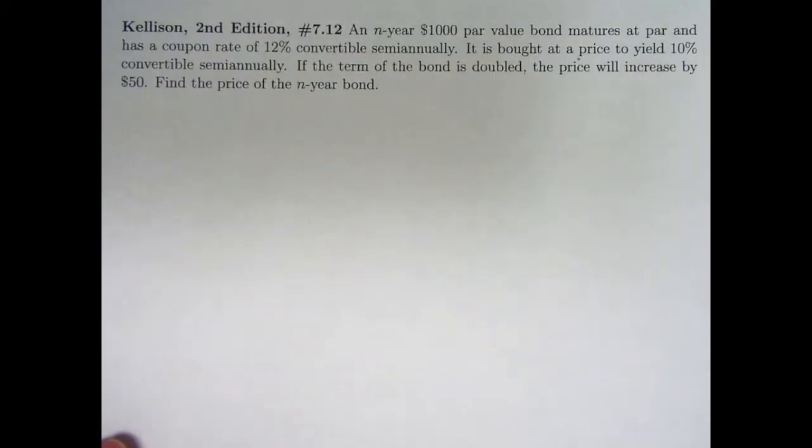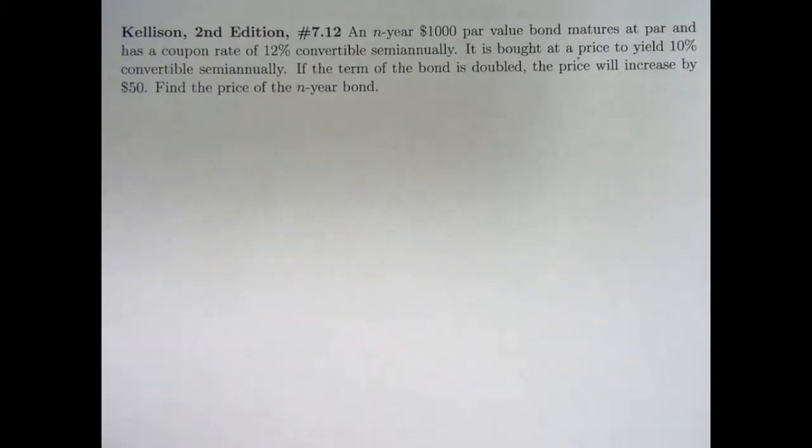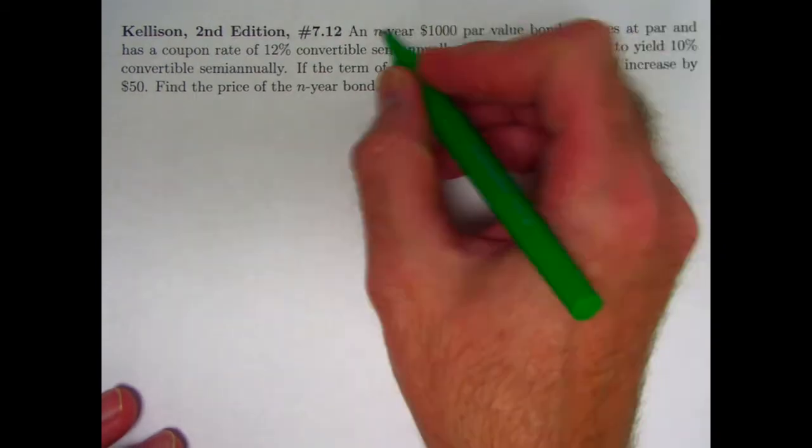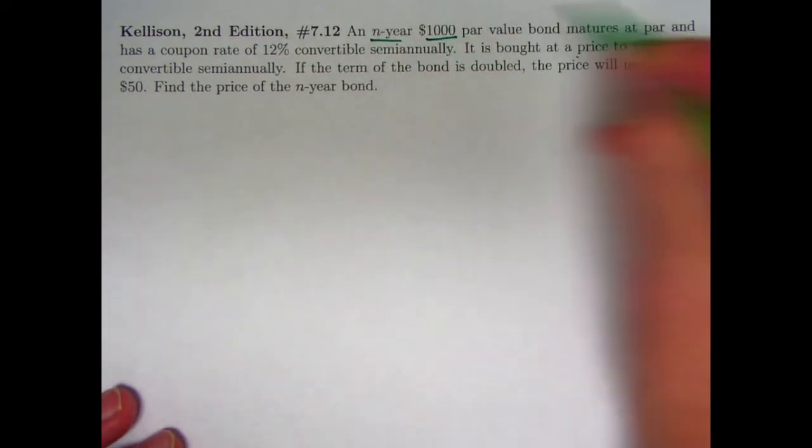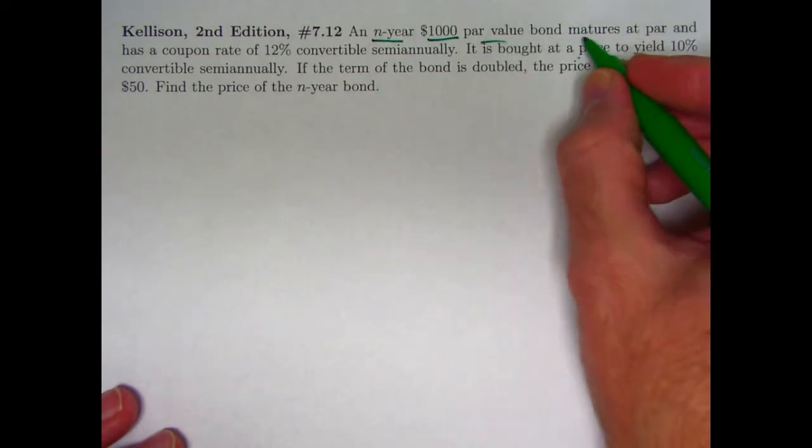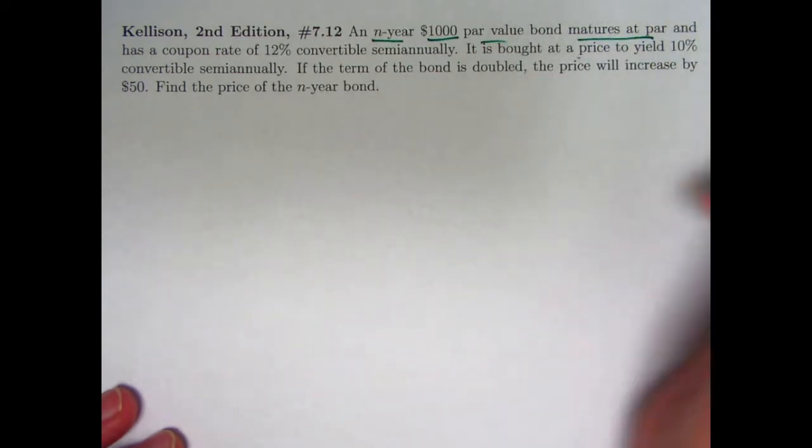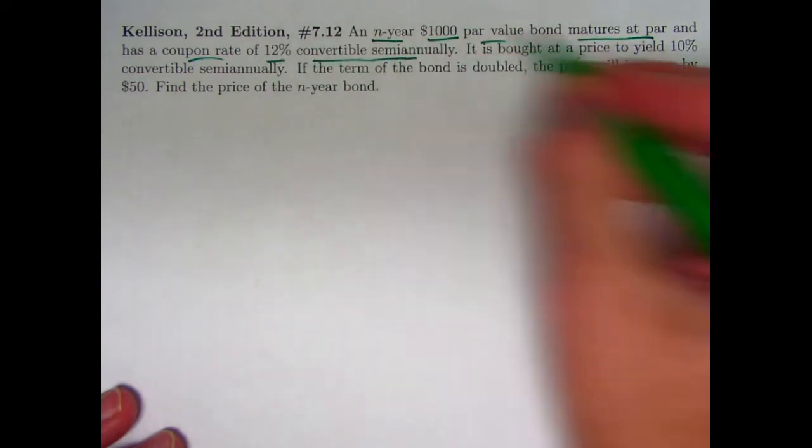Just like in the last video it's going to turn out to be most useful to use the base amount formula. It's an n-year bond, n is unspecified, $1,000 par value. It matures at par, that's the redemption value. The coupon rate is 12% convertible semi-annually.